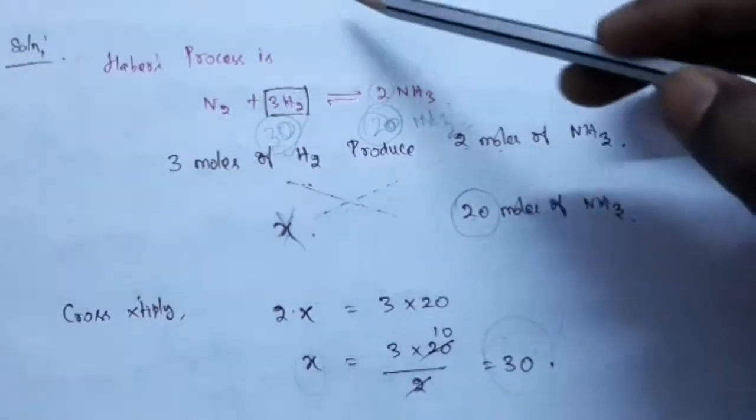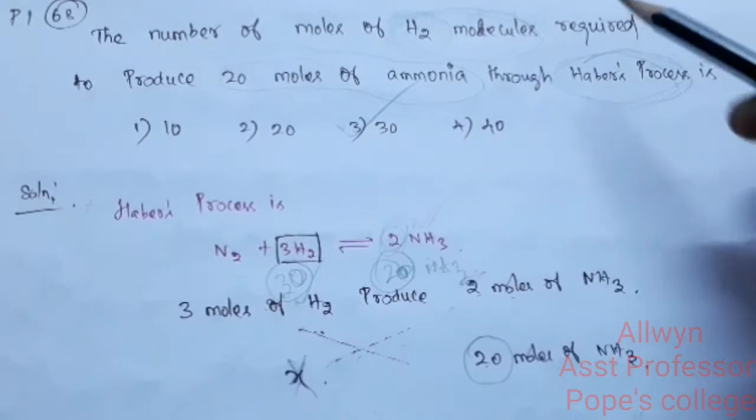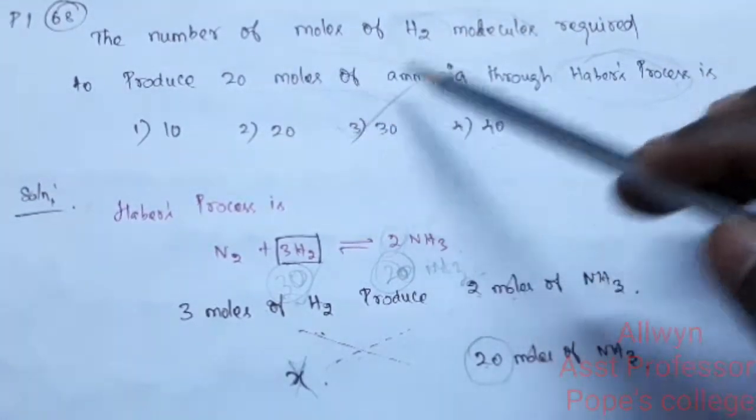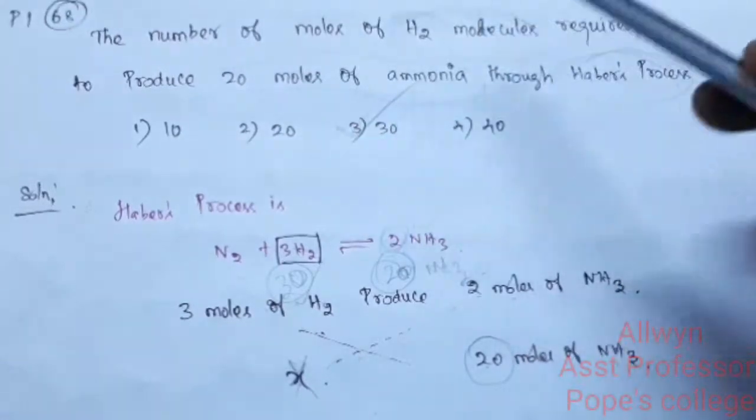30 is the answer. The option is 3. 30 moles of H2 molecules required to produce 20 moles of ammonia. Thank you.